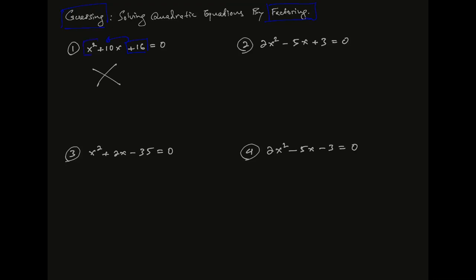We need to use x squared. The x squared is 1, we call it one x squared. x squared times x, so x times x, x squared minus x.